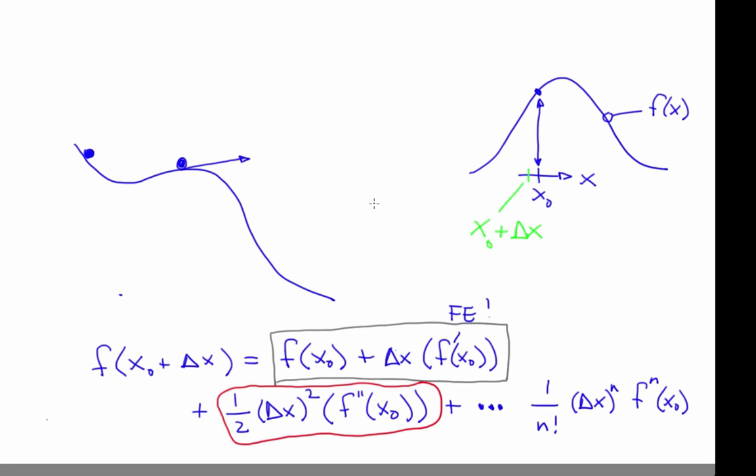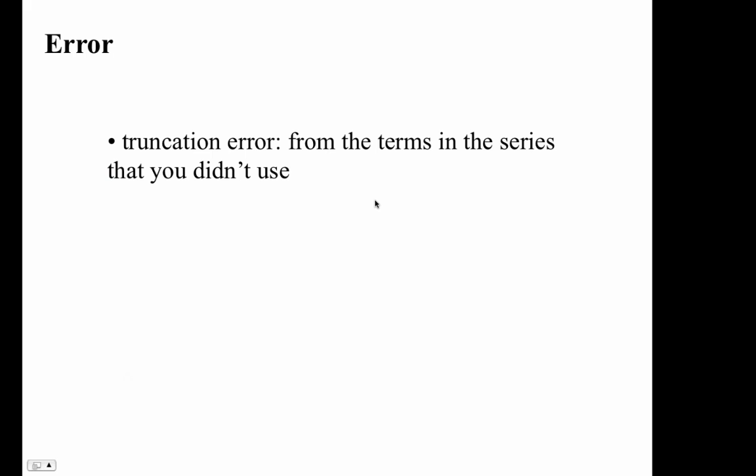That way of estimating error, which is common in the field of numerical computing, rests on two implicit assumptions. First, that if you use the full series out to an infinite number of terms, the answer would be 100% right. The second assumption is that successive terms in the series are smaller. Those assumptions are generally but not always true. This kind of error I'll call the truncation error — the error that comes when you're doing a series approximation and there are some terms that you don't use.